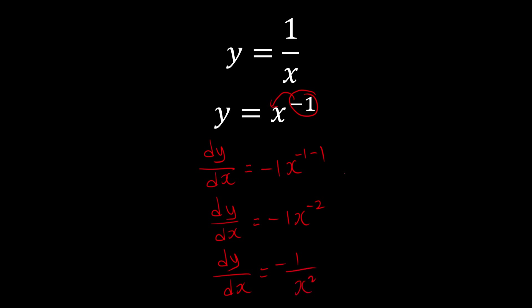The reason I write it this way is: just remember, when you have a negative power, it means we bring it back down. So for example, if you have x to the power of negative 5, it becomes 1 over x to the power of 5.